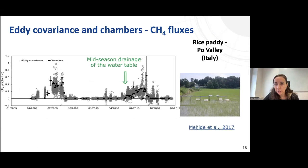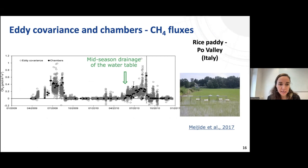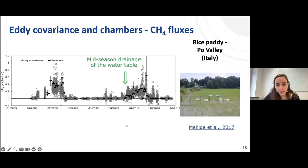In this experiment we measured both with eddy covariance and with chambers for methane fluxes. The chambers provide data only when we go — once a day — while the eddy covariance gives data every 30 minutes. In the second year, we had a mid-season drainage of the water table, which resulted in lower methane emissions. This may have effects on yield, and that also has to be accounted for.